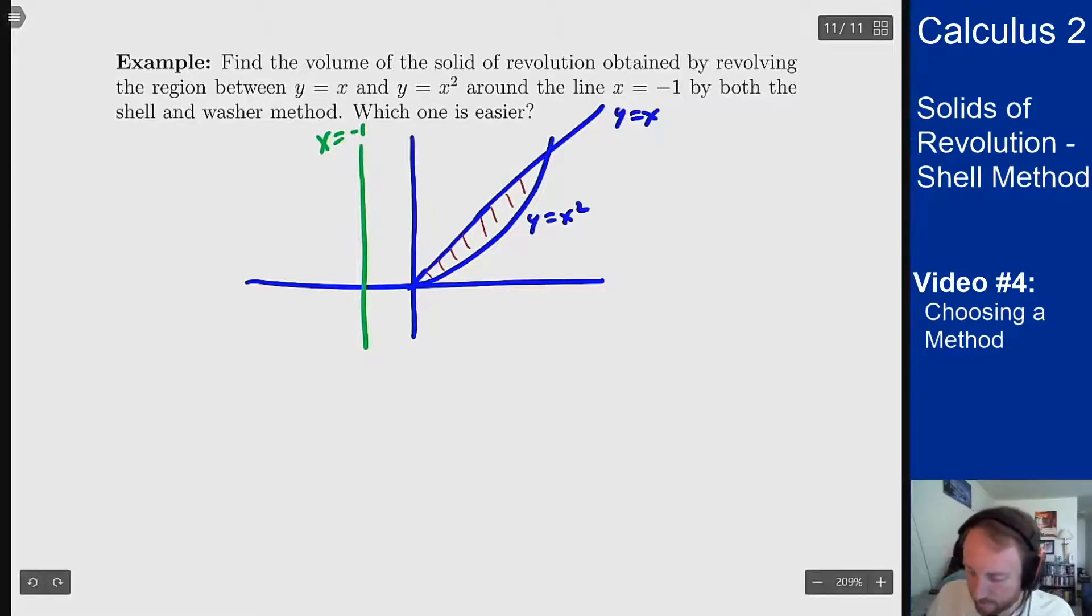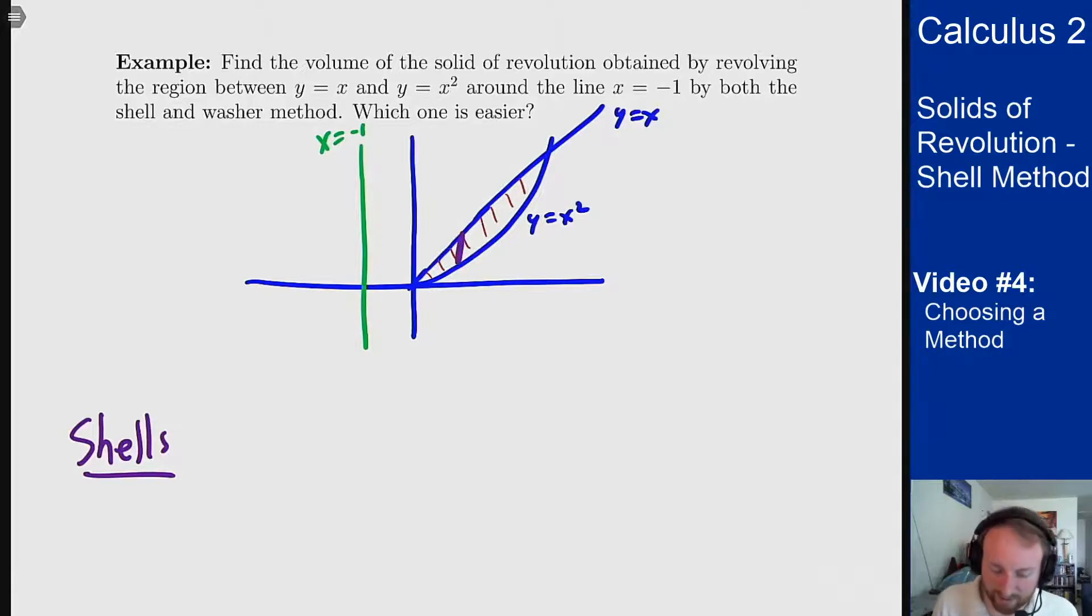Okay so we're going to do this one both by shells and washers. Let's start with shells. For the shell method since I have a vertical axis of rotation I need to rotate around a vertical segment. So we're going to have a segment like that that I'm rotating and this is going to be a dx integral because these segments will tile in the x direction.